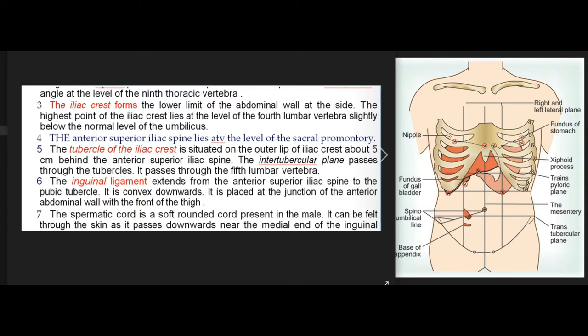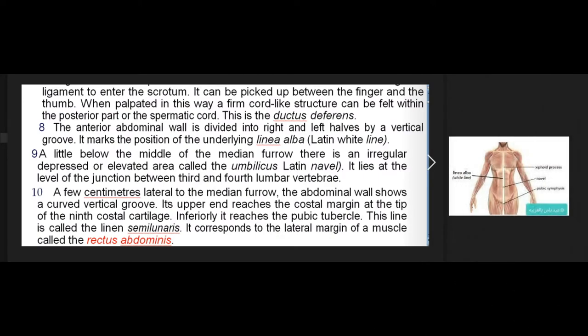The inguinal ligament extends from the anterior superior iliac spine to the pubic tubercle. It is convex downwards and is placed at the junction of the anterior abdominal wall with the front of the thigh. The spermatic cord is a soft rounded cord present in the male. It can be felt through the skin as it passes downwards near the medial end of the inguinal ligament to enter the scrotum. It can be picked up between the finger and the thumb, and a firm cord-like structure can be felt within the posterior part of the spermatic cord.